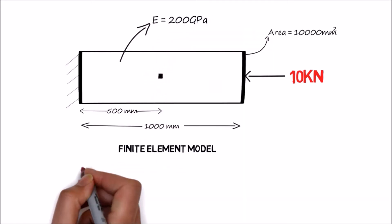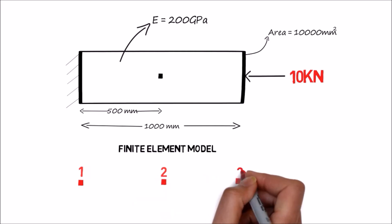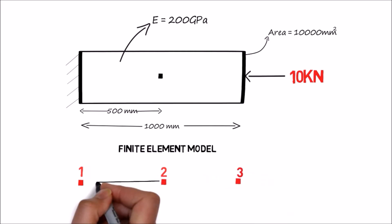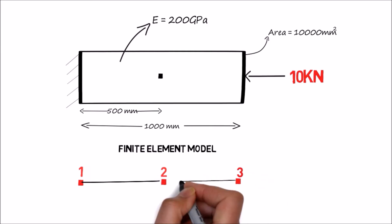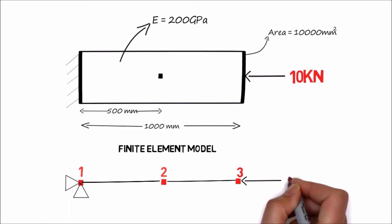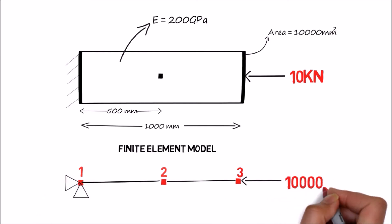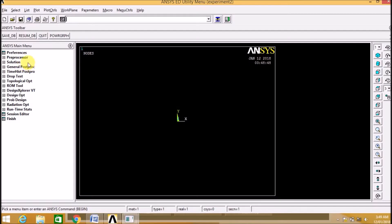Now we are making a finite element model, so we are considering 3 nodes. We are connecting the nodes using elements. We are fixing node 1 and applying the compressive load of 10,000 N at node 3.